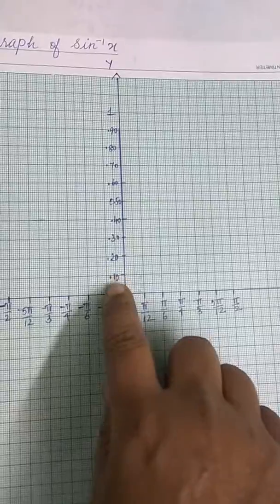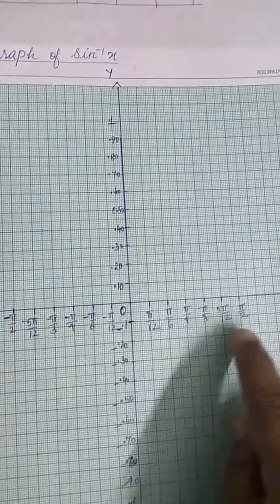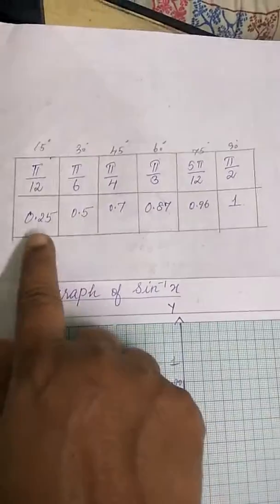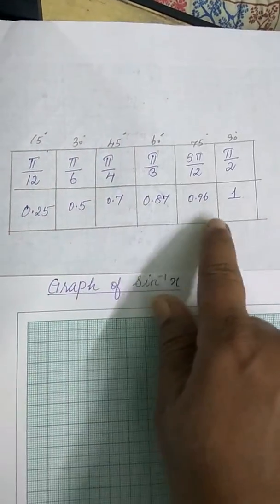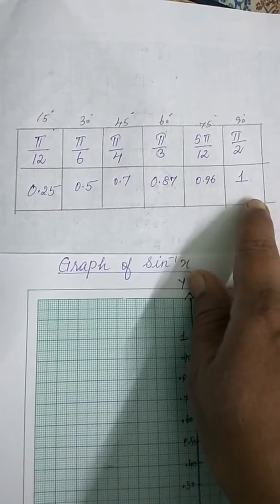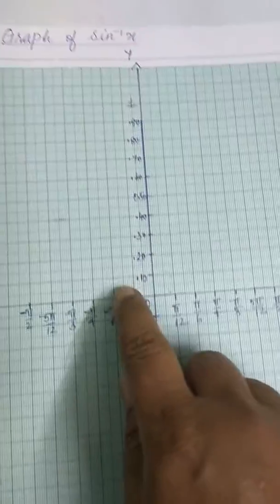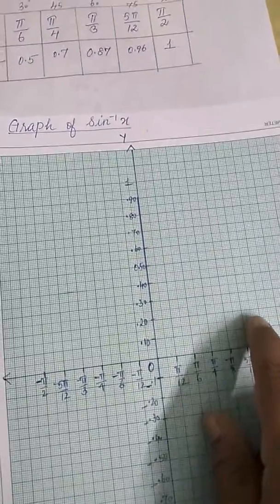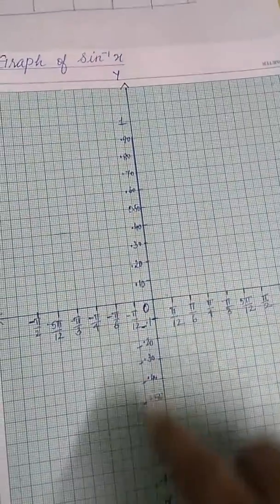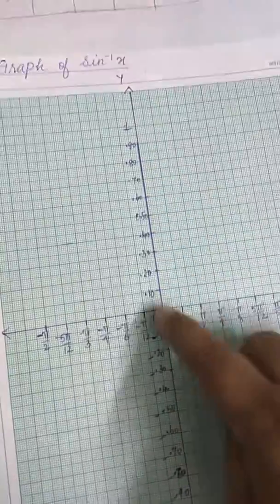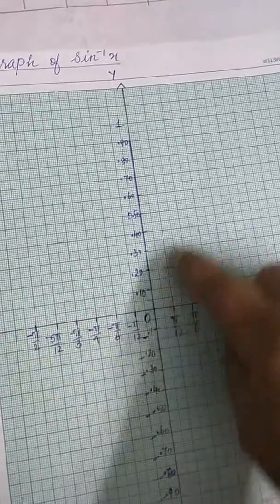On the y-axis, for the angles 15, 30, 45, 60, 75, and 90 degrees, I found the corresponding sine values which are in decimals. For any sine graph or cosine graph, the range will be from 1 to minus 1 only.